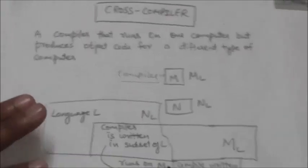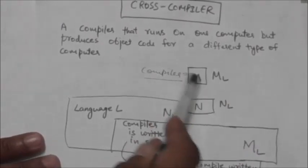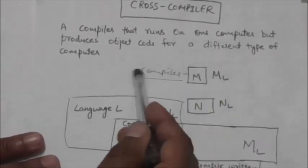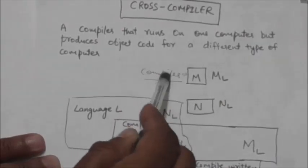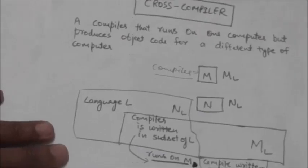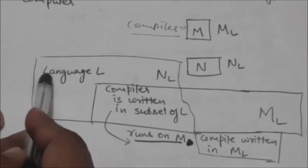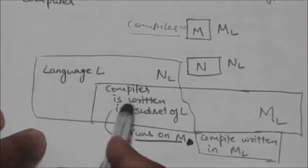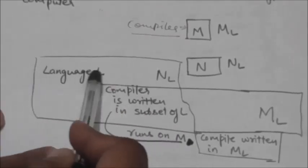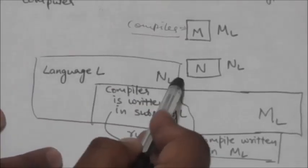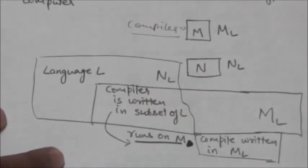Now, how can we implement this cross compiler which runs on machine M but generates code executable on machine N? Suppose there is a language L, and we have written a compiler in a subset of language L. That compiler will translate language L into machine language NL, and this compiler runs on machine M.